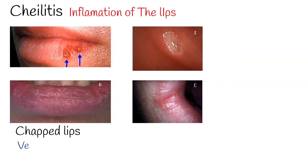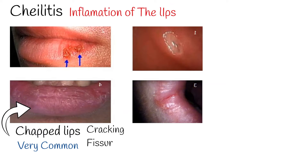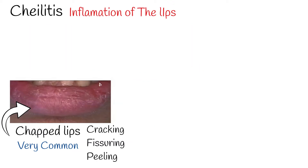One most common type of cheilitis is chapped lips, also known as dry lips. Chapped lips is characterized by the cracking, fissuring, and peeling of the skin of the lips. While both lips may be affected, the lower lip is the most common site.